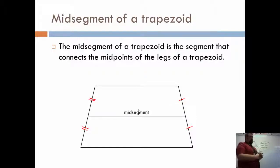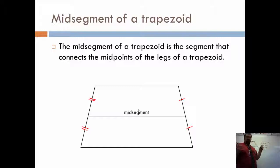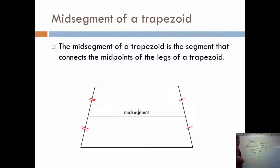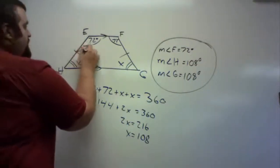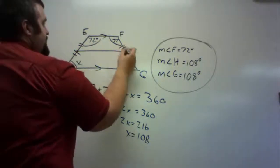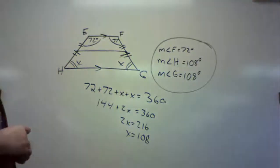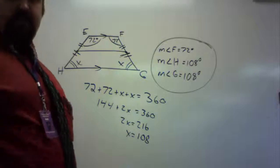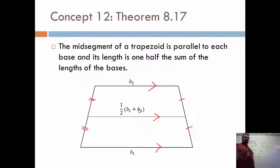I forgot about something vital: the mid-segment of a trapezoid. The mid-segment is just like the mid-segment of a triangle — it's the segment that connects the midpoints of the legs of a trapezoid. It connects one to the other. There's only one mid-segment per trapezoid, and it cuts the trapezoid basically in half down the middle. The mid-segment of a trapezoid is parallel to each base, and its length is one-half the sum of the lengths of the bases.